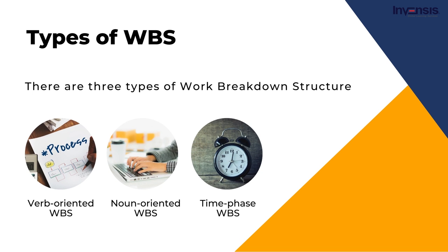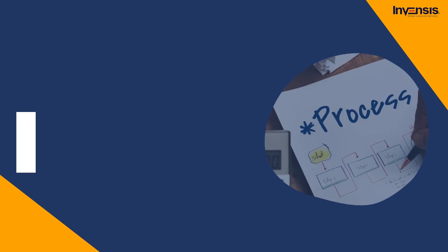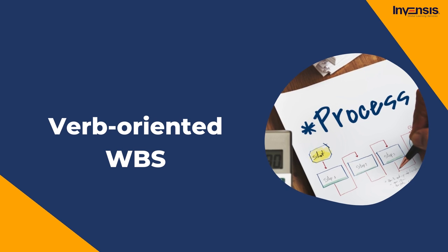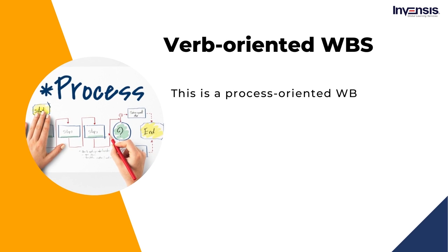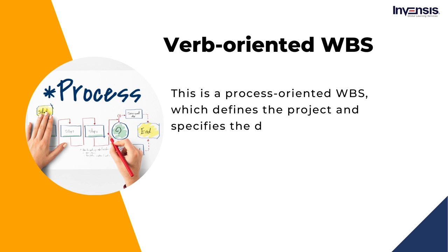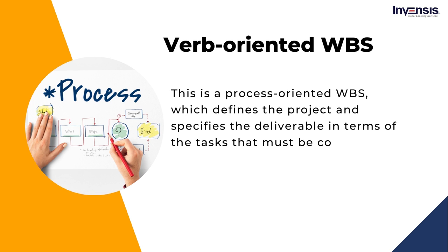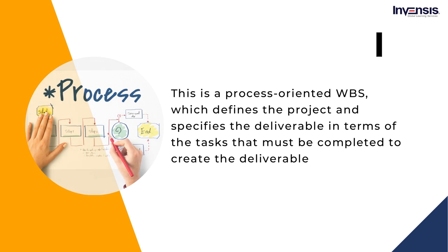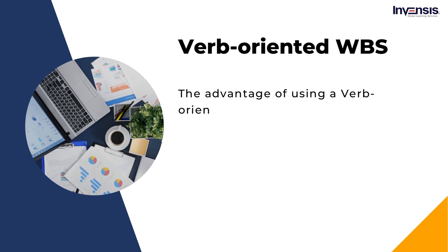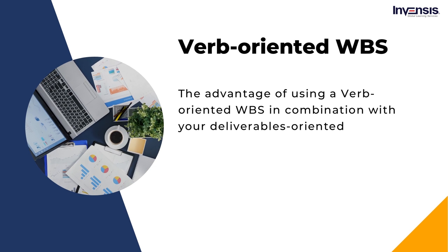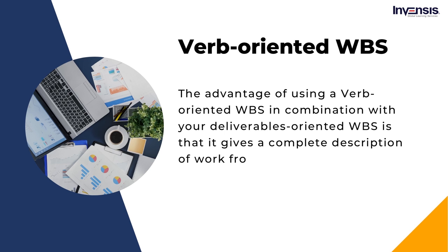There are three types of work breakdown structure: verb-oriented WBS, noun-oriented WBS, and time-phase WBS. Verb-oriented WBS is a process-oriented WBS which defines the project and specifies the deliverable in terms of the tasks that must be completed to create the deliverable. The advantage of using a verb-oriented WBS in combination with your deliverables-oriented WBS is that it gives a complete description of work from a functional standpoint, resulting in a more cohesive project scope. It may also be used to guarantee that high-quality practices are in place throughout the duration of your project.